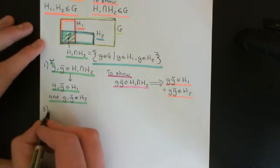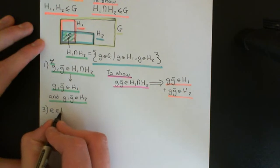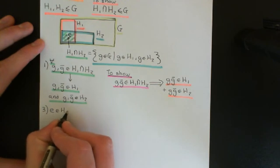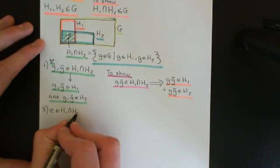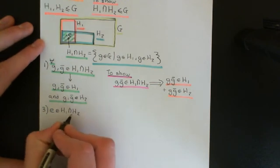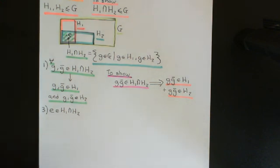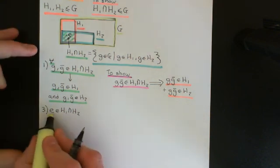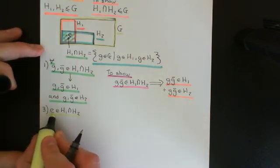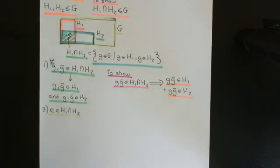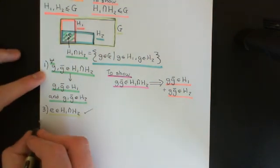Axiom three says the identity element of G must be in H1 ∩ H2. That's trivially obvious because the identity is in H1 and the identity is in H2, so it's going to be in the intersection of those two, and therefore in H1 ∩ H2.